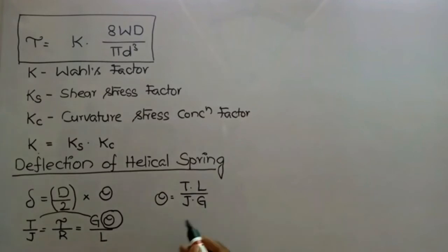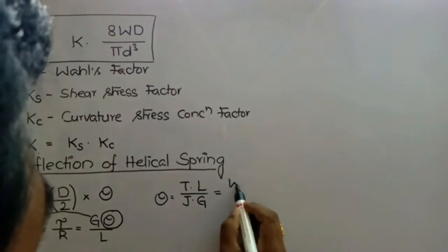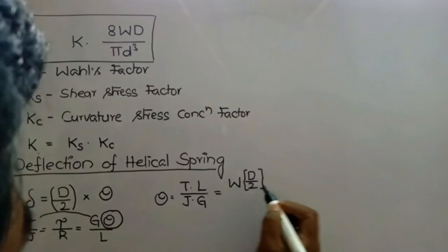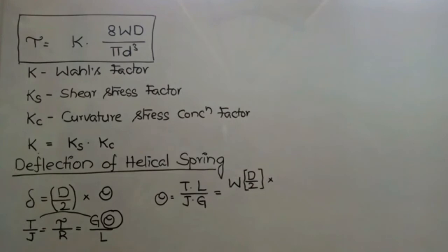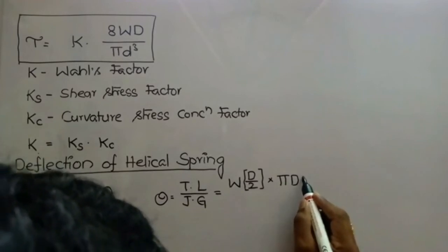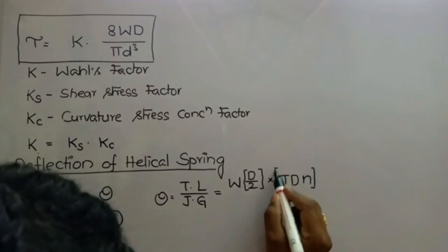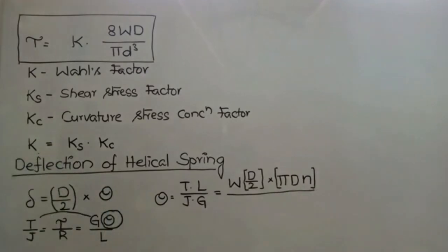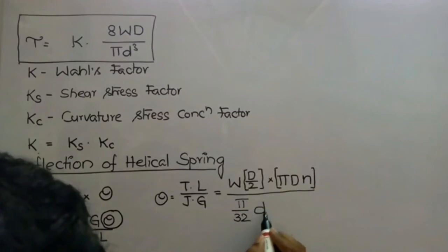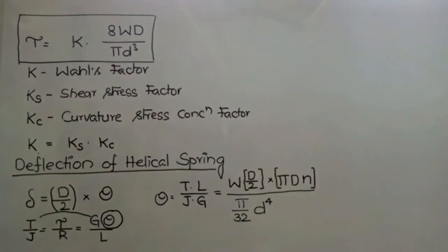So theta = TL/GJ, where T is the twisting moment equal to the load W times the radius of the coil D/2. The length of the spring L is found by first finding the length of one coil: since each coil has a circular cross-section, the length of one coil equals the circumference πD. For n active coils, the total spring length L = πDn. J is the polar moment of inertia for a circular cross-section: J = πd⁴/32.